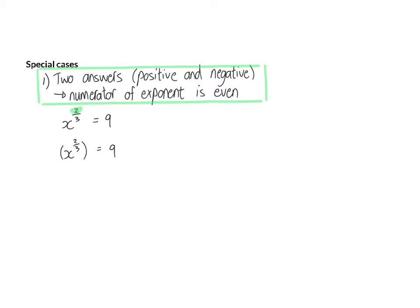Start off doing exactly the same as in the previous example. So we raise to the reciprocal which is 3 over 2 on both sides. But now you need to remember that because of that even numerator the answer will now be plus or minus. The reason for this is whether you take a negative or a positive value, any time it is to the power of an even number they will both end up being positive.